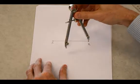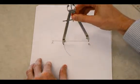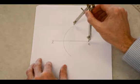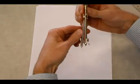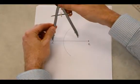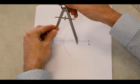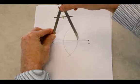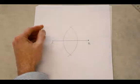Then I'm just going to make an arc. Okay, like that. Then, without changing the size of the compass or the measure of the compass, I'm going to put the point end on point A and make another arc. Like that.